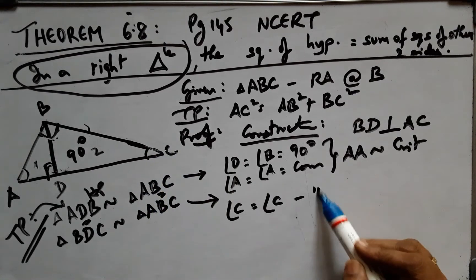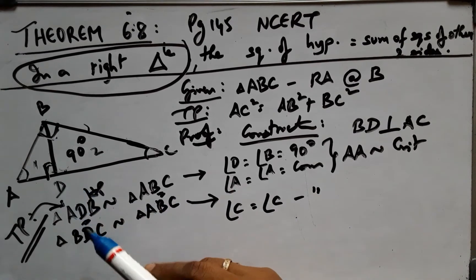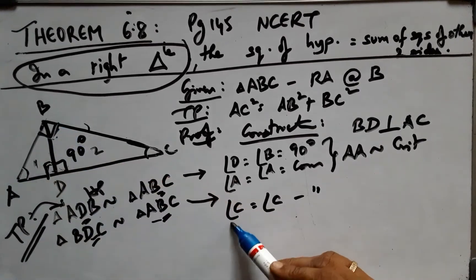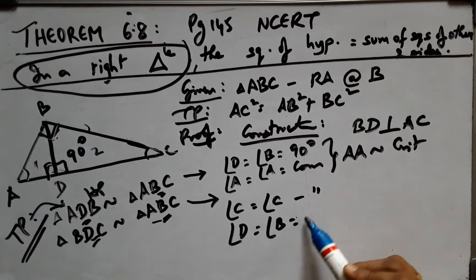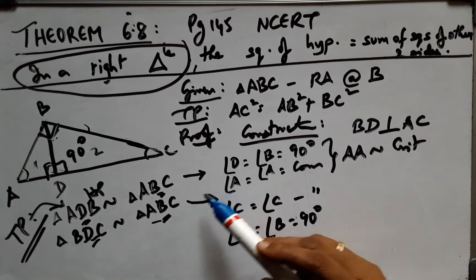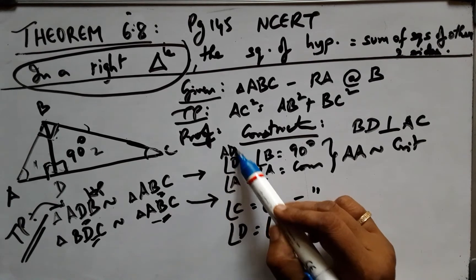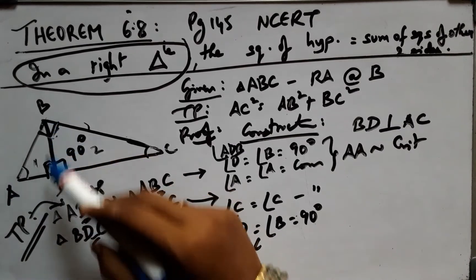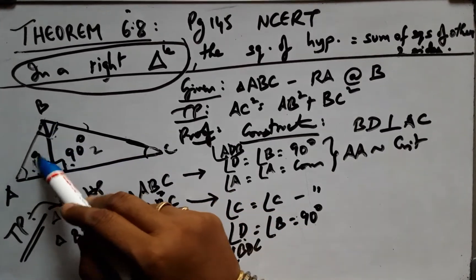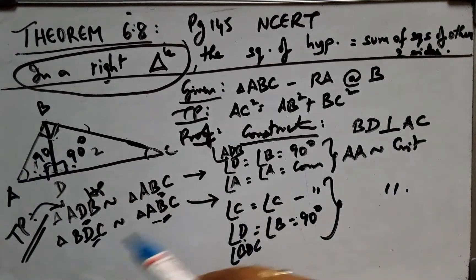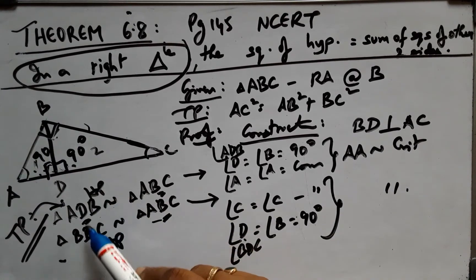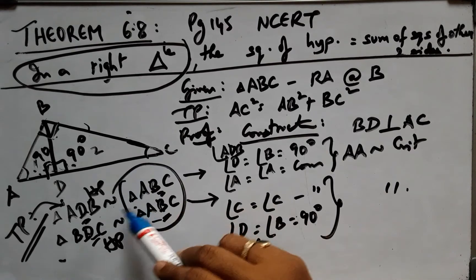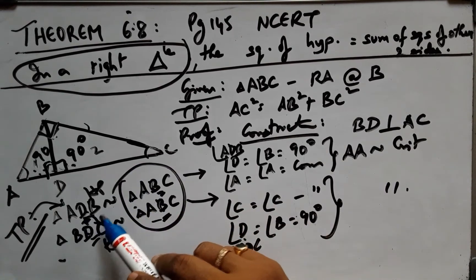Similarly, angle C is the common angle, and angle D is 90 degrees. We use the ADB and BDC angles. ADB and BDC form a linear pair, each being 90 degrees. This has been proven — the two triangles are similar to each other. This is a unique property of the right-angle triangle.